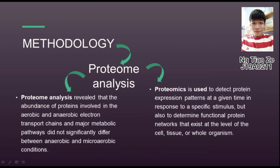Let me continue with the methodologies. In this study, the main methodology used is proteome analysis. After the 16 strains of propionic acid bacteria undergo initial screening, proteome analysis is used to analyze particular strains. Proteome analysis revealed that the abundance of proteins involved in aerobic and anaerobic electron transport change, and major metabolic pathways did not significantly differ between anaerobic and micro-aerobic conditions.